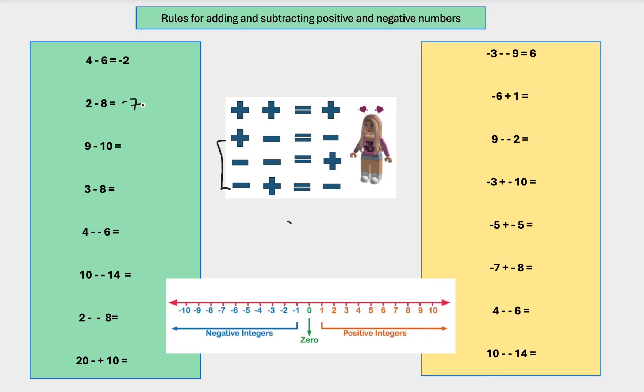The next one. 9 minus 10. Same again, but it's a positive 9. We want a minus 10. So we're going to start on this 9 and we're going to go 1, 2, 3, 4, 5, 6, 7, 8, 9, 10. So our answer is minus 1.